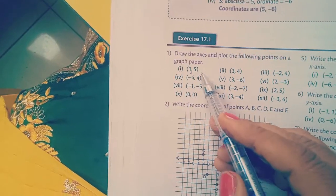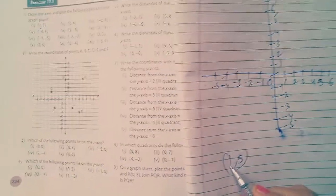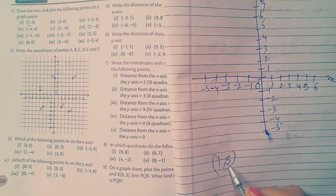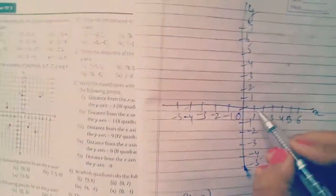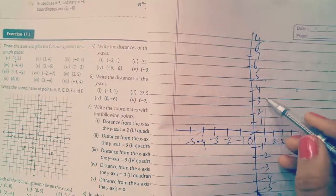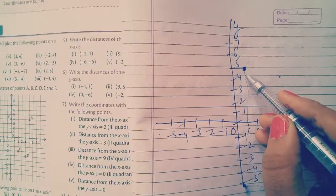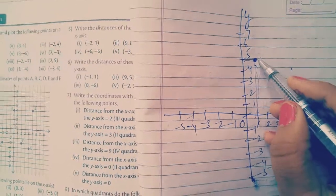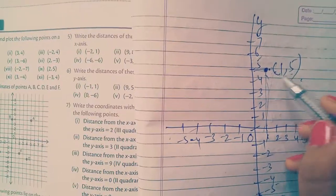So here, first question is (1, 5). It means value of x is 1 and value of y is 5. Both are positive, so it will lie in the first quadrant. So 1 is here and 5 is here. Extend them and they will join here. With the help of pencil, it will meet here. So this point is (1, 5). This point has this location. Then next is (3, 4). Value of x is 3 and value of y is 4. So 3 is here, then 4 is here. This point is the location for second point.